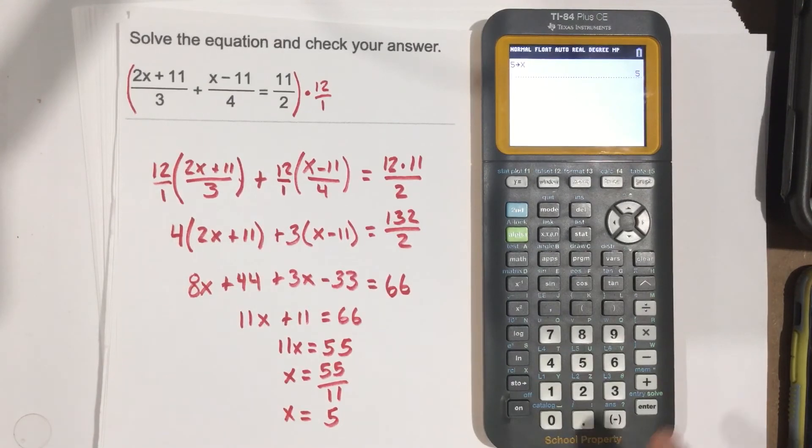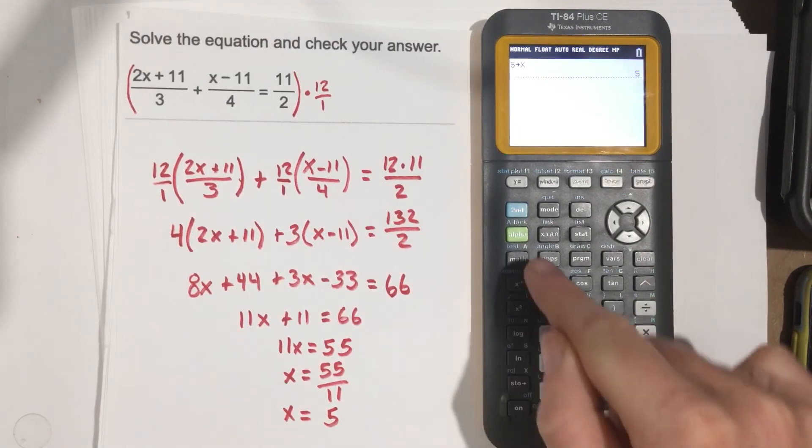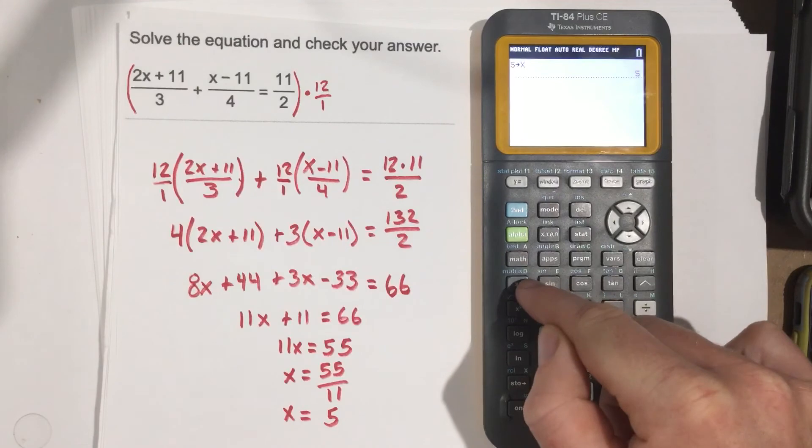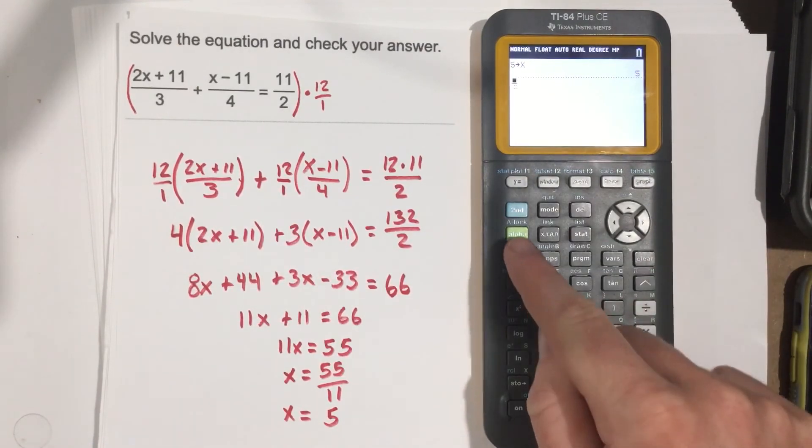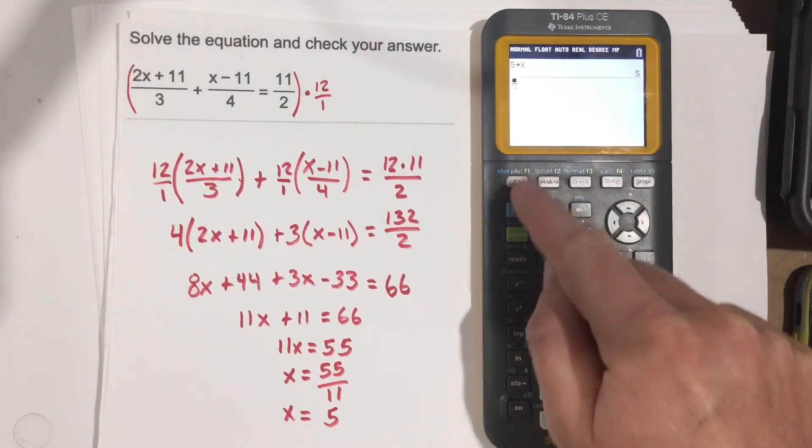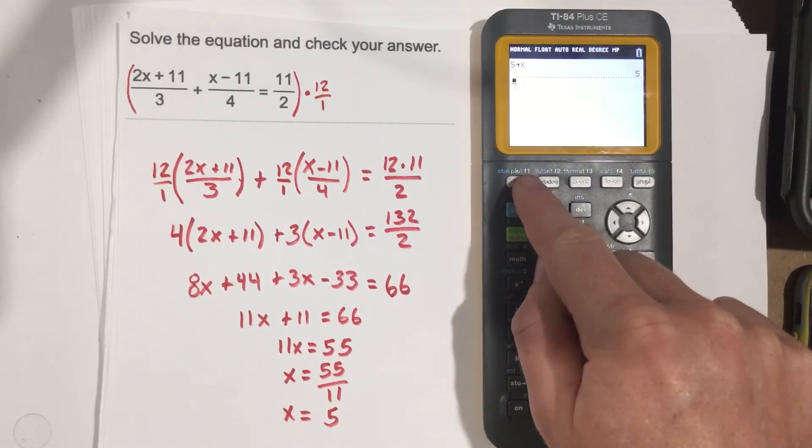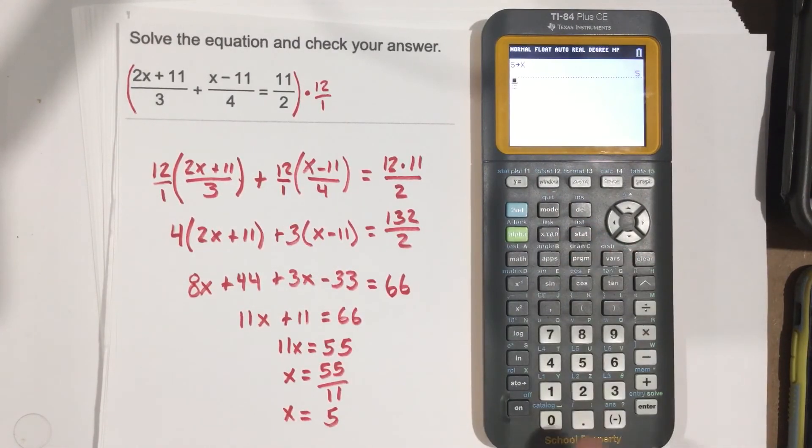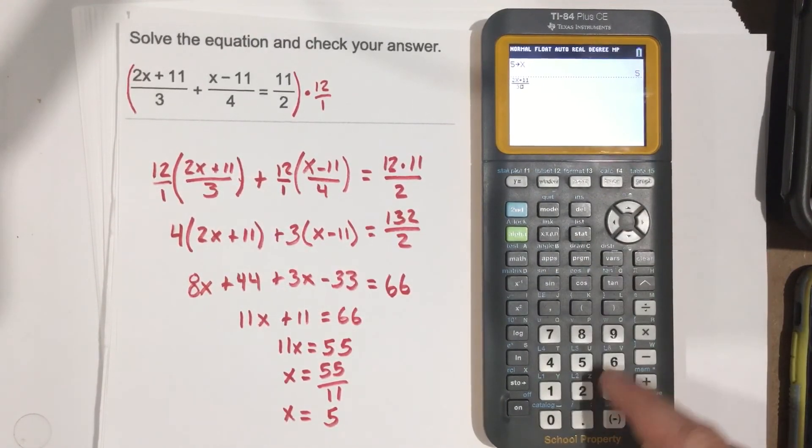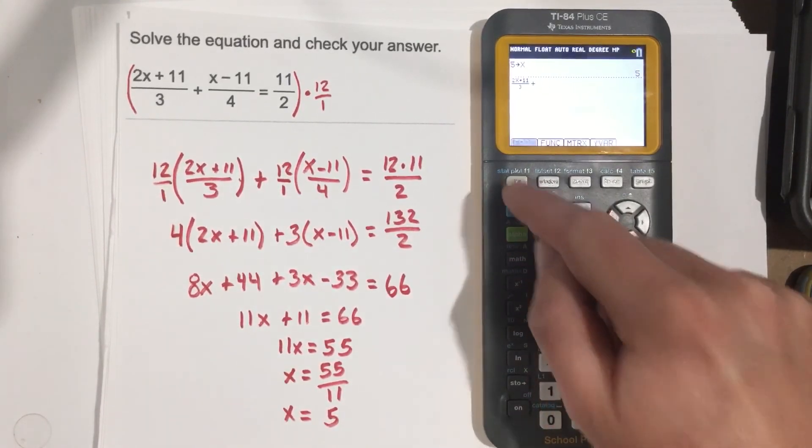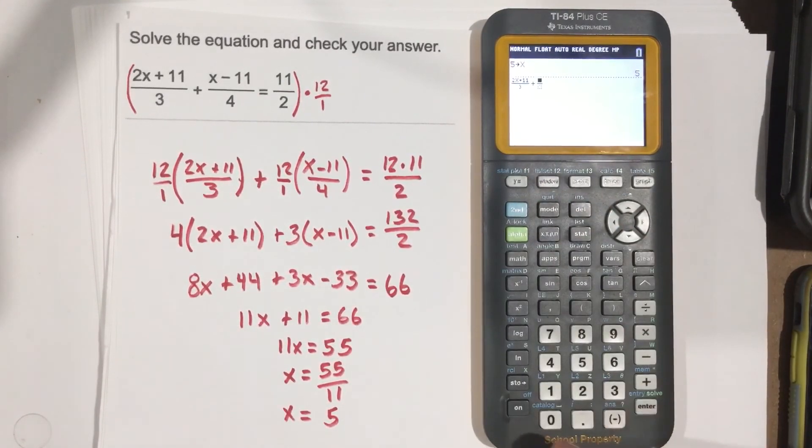We can use this math fraction button, alpha f1 fraction. You can see the green f1 there. We're going to say (2x+11)/3 plus, do the alpha f1 again to get another fraction, and we'll say (x-11)/4.